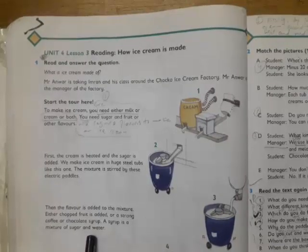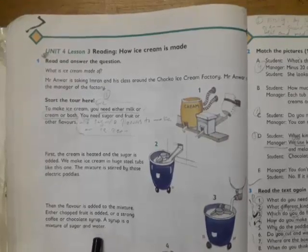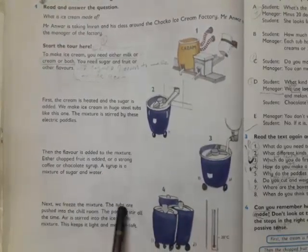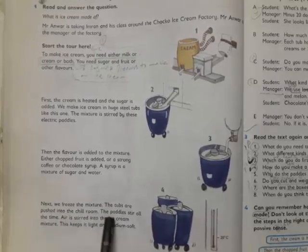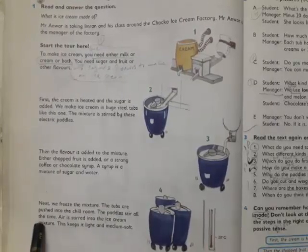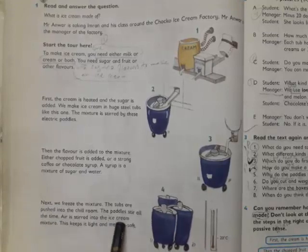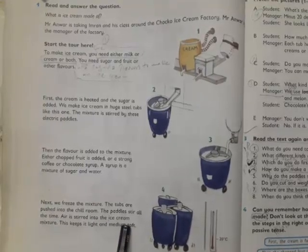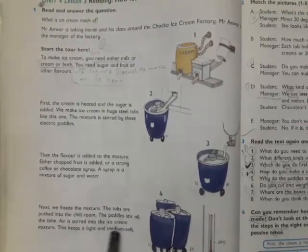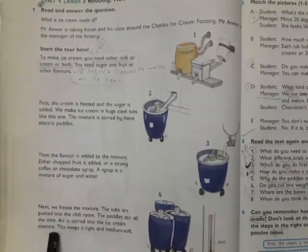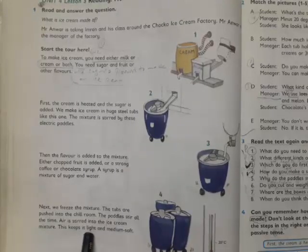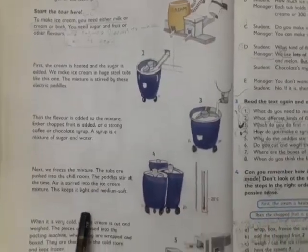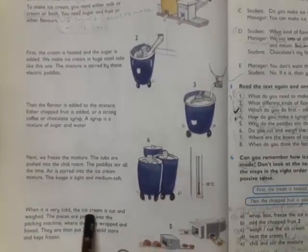In the next step we freeze the mixture. The tubs are pushed into the chilled room. The paddles are still stirred all the time. Air is stirred into the ice cream mixture. This keeps it light and medium soft. Then we freeze the mixture, but all the time the paddles are stirred so the air is mixed into the ice cream which will keep it light and soft.